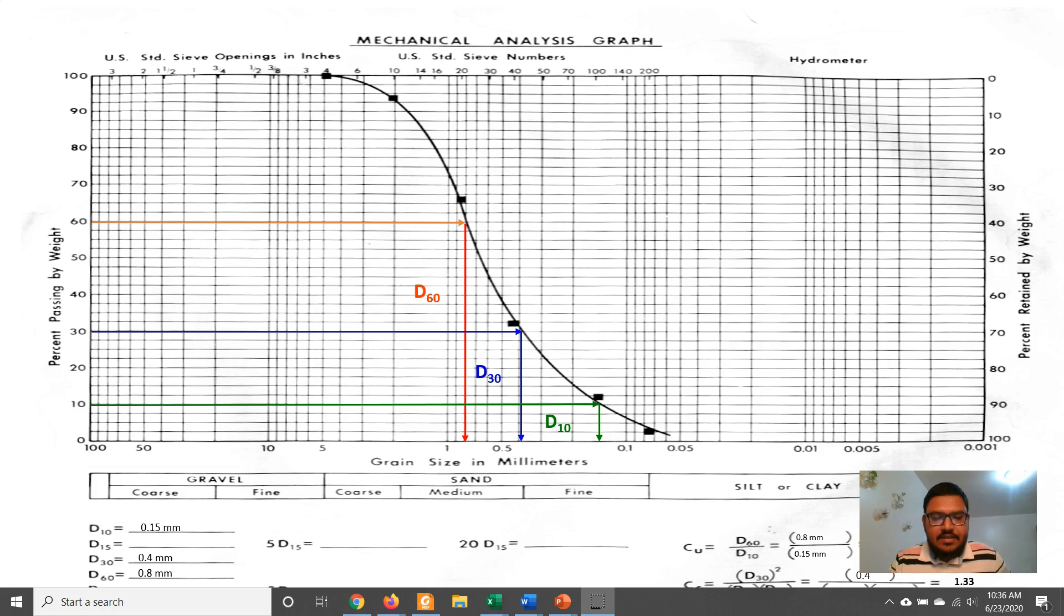From the grain size distribution curve, we can determine the value of D60, D30, and D10. D60 indicates 60% particles are finer than that size.